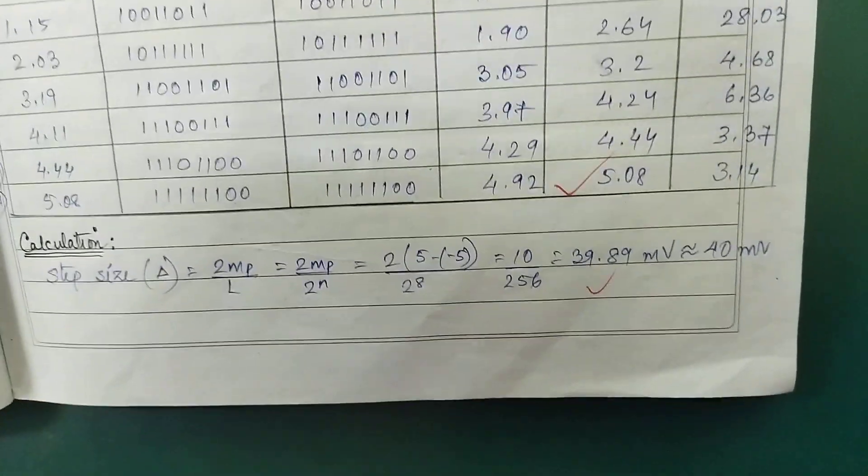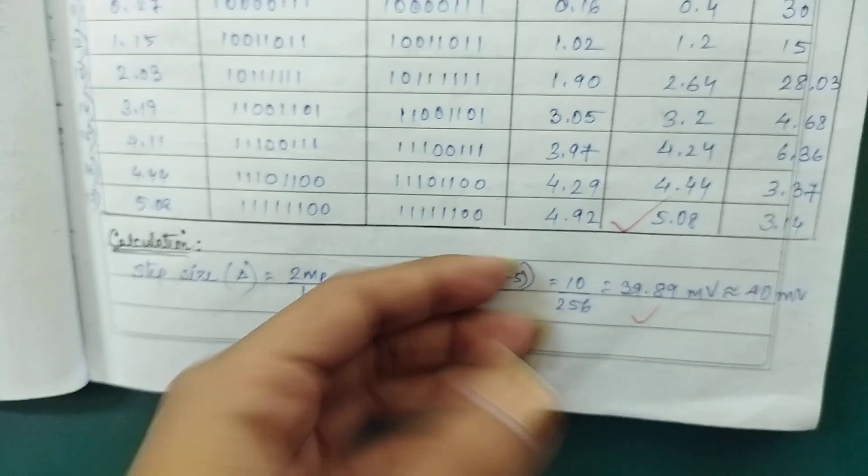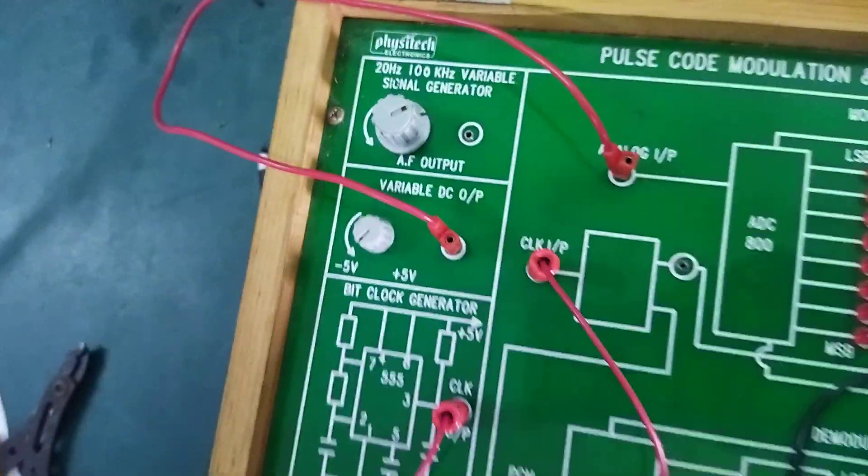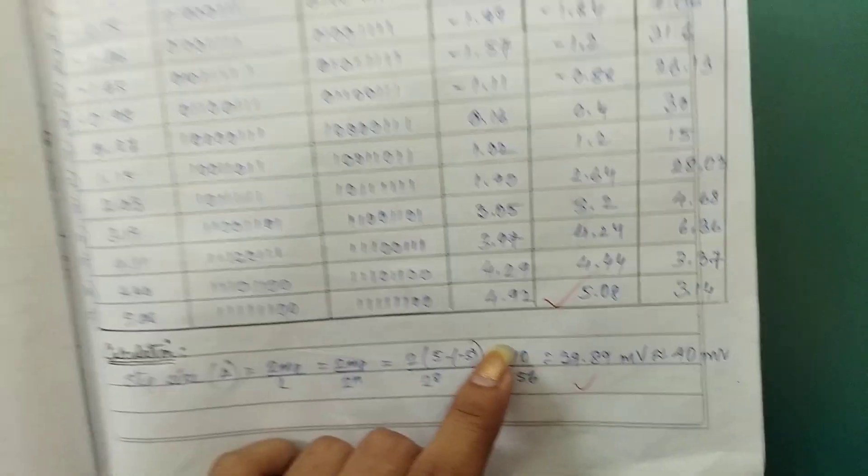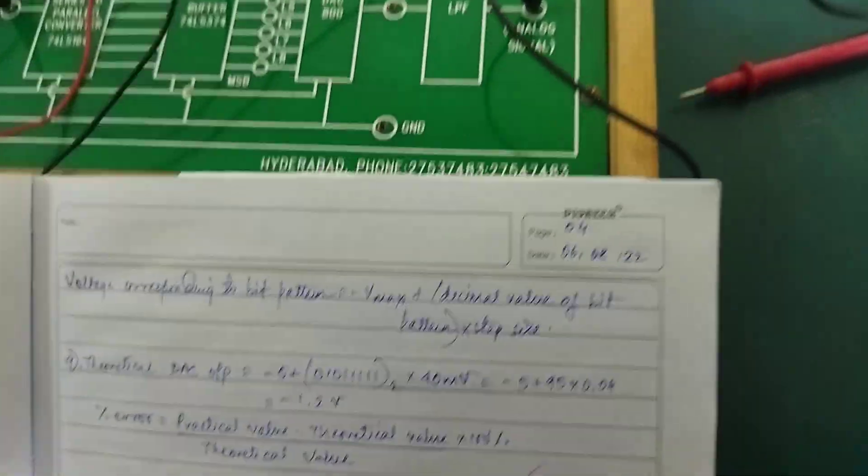The M peak-to-peak value, then calculate 10 divided by 256. This gives 40 millivolts. The step size is 40 millivolts.